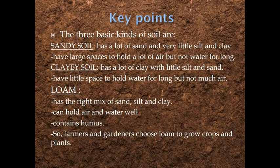We have three basic kinds of soil: sandy soil, clayey soil, and loam. Sandy soil has a lot of sand and very little silt and clay; it has large spaces to hold air but not water for long. Clayey soil has a lot of clay with little silt and sand; it has little space to hold water but not much air. Loam has the right mix of sand, silt, and clay; it can hold air and water, and contains humus. So farmers and gardeners choose loam to grow crops and plants.